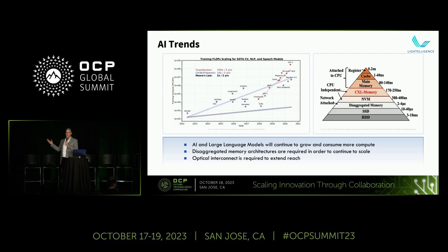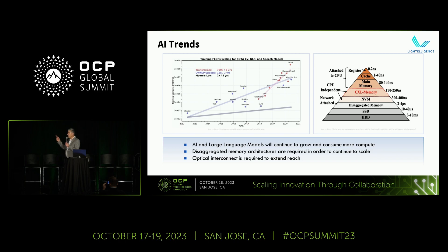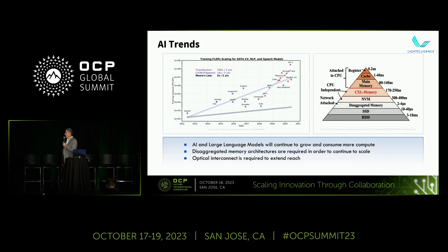The trend in large language models — they're not getting any smaller. As that trend continues, the need for disaggregated memory architectures will grow. We need to process these models at a high rate, but they're large and can't all reside in server memory anymore. Furthermore, it's not just the memory and memory bandwidth that is the issue — it's the latency. CXL memory is nicely placed at one NUMA hop away from system memory, around 170 nanoseconds, compared to network-attached memory and SSD at several microseconds. To combine them, what's needed is optics, because as you move memory further away, you'll need optics to extend that reach.